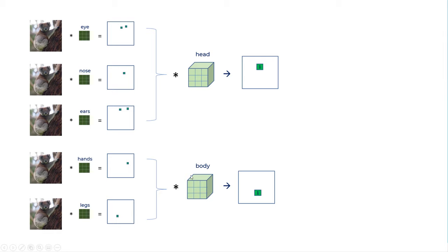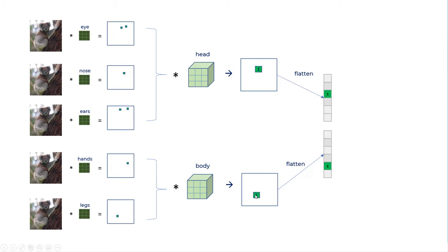So you are aggregating these results using a different filter for head. And now this becomes a koala head detector. Similarly, there could be koala body detector. And now we got these two new feature maps where this feature map is saying that koala's head is at this location and koala's body is at this particular location.